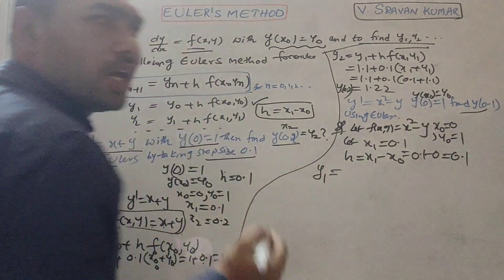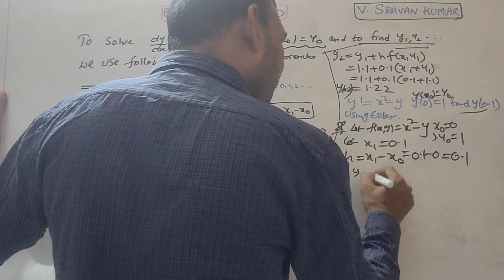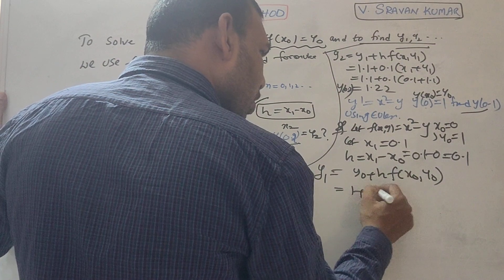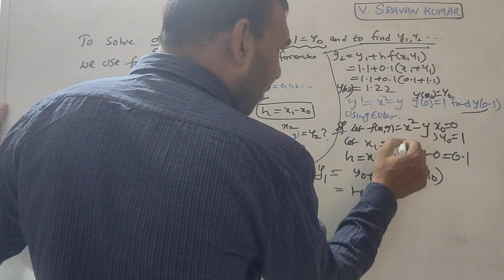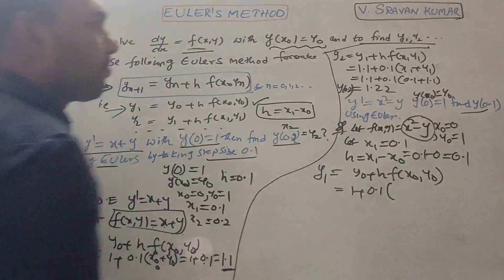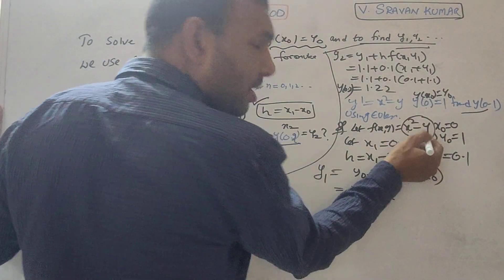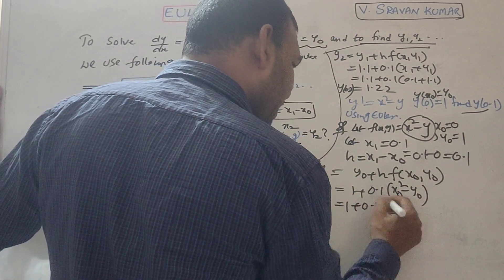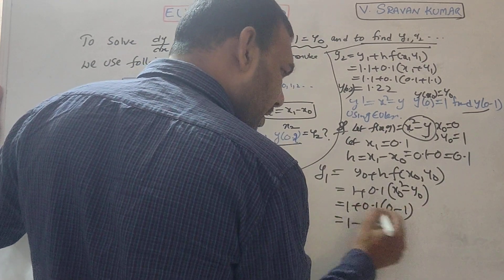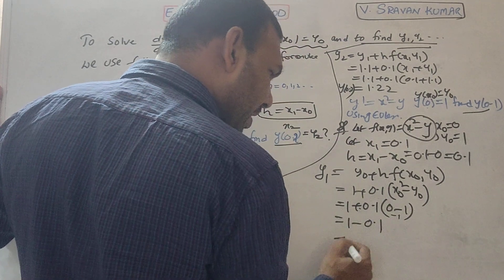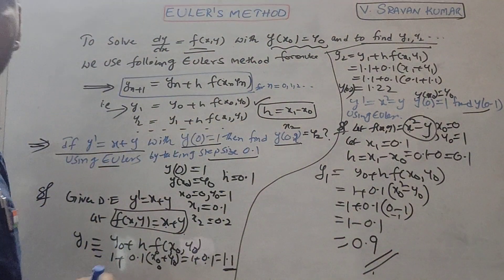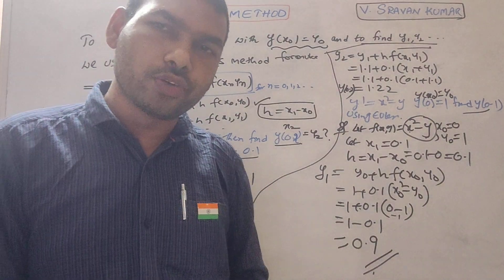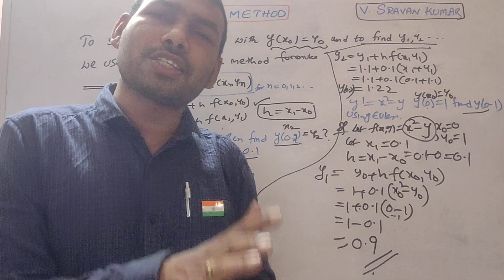Using Euler's method to find y₁: y₁ = y₀ + h · f(x₀, y₀). Here y₀ = 1, h = 0.1, and f(x, y) = x² - y, so f(x₀, y₀) = x₀² - y₀ = 0² - 1 = -1. Therefore y₁ = 1 + 0.1 × (-1) = 1 - 0.1 = 0.9. So y(0.1) = 0.9.